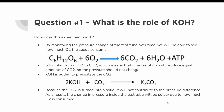To answer our first question — what is the role of KOH — let's first go over how this experiment works. By monitoring the pressure change at the test tube over time, we will be able to see how much O2 the seeds consume. From the cellular respiration equation, we can see that there is a six-to-six molar ratio of O2 to CO2, which means that n moles of O2 will produce equal amounts of CO2.